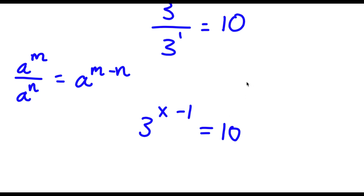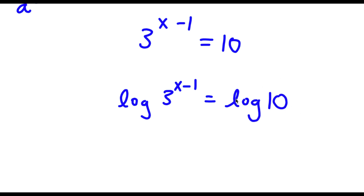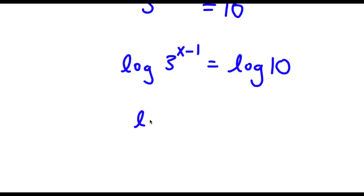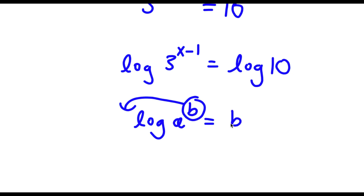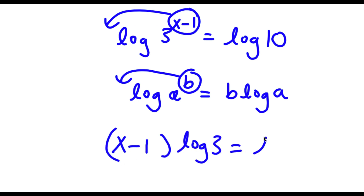So now to solve this, I'm going to take the log on both sides. So now I have log of 3 to the power of x minus 1 is equal to log 10. Now if I have something in the form log a to the power of b, I can move this exponent b to the front of the logarithm, so this equals b times log a. In this case I can move x minus 1 to the front, so this equals x minus 1 times log 3 is equal to log 10.